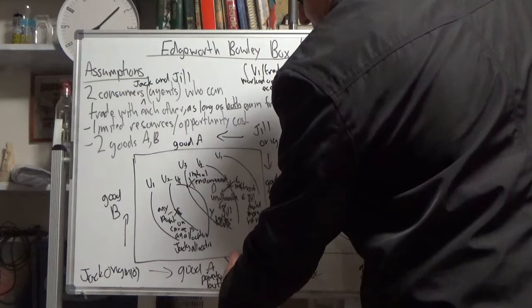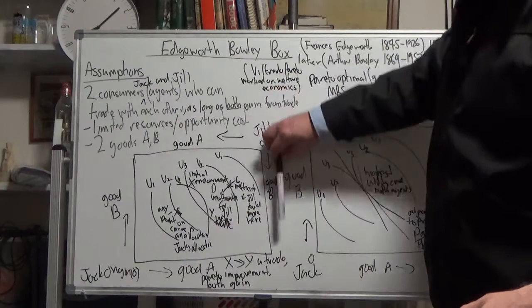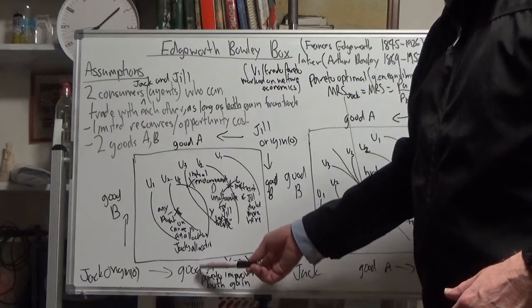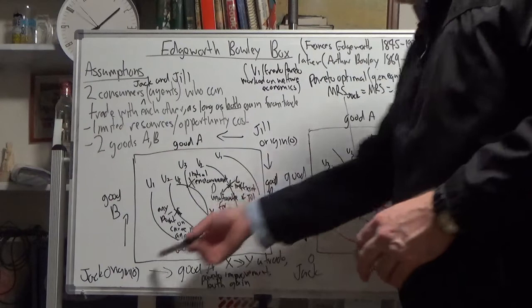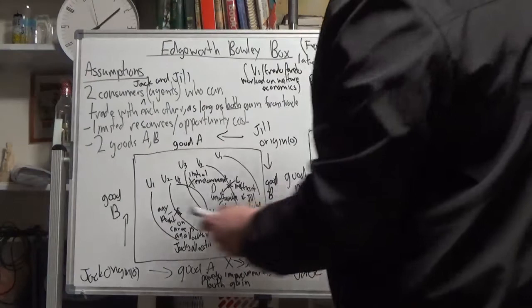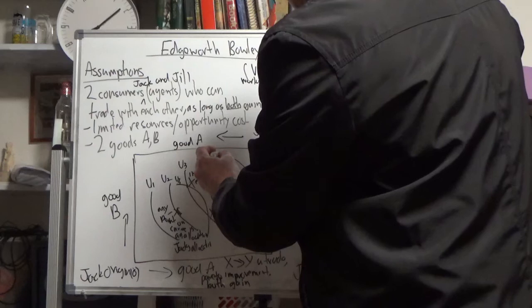With Jack, that's his choice of good A and his choice of good B. But with Jill, her choice of good A is along here and good B is along there. Good A is opposite, good A are opposites in the box, and so is good B. Don't mix that around. The origin point O is that point there where both consumers start from, and then they choose their bundle of goods.